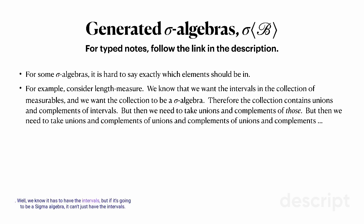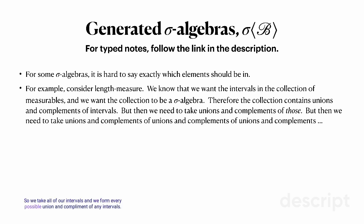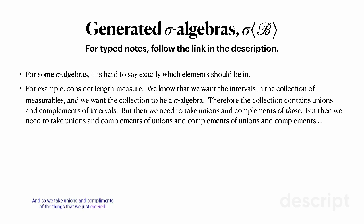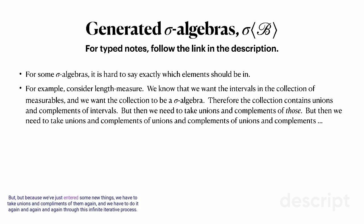We know the collection has to have the intervals, but if it's going to be a sigma algebra, it can't just have the intervals — it also has to be closed under unions and complements. So we take all our intervals and form every possible union and complement. But now we've got new things in the collection, and we risk it again not being closed under union and complement. We take unions and complements of those newly entered things to get new objects, and we have to do it again and again through this infinite iterative process.